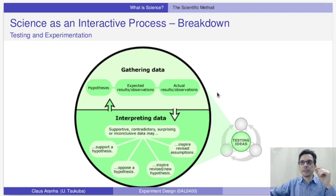And it's interesting to see here that this part of the process is described as divided in two parts, gathering data and interpreting data. This division is actually very important. If we look at the gathering data part, we see what we normally expect from the scientific method, hypothesis, expected result, and actual results. But that is just half the story.